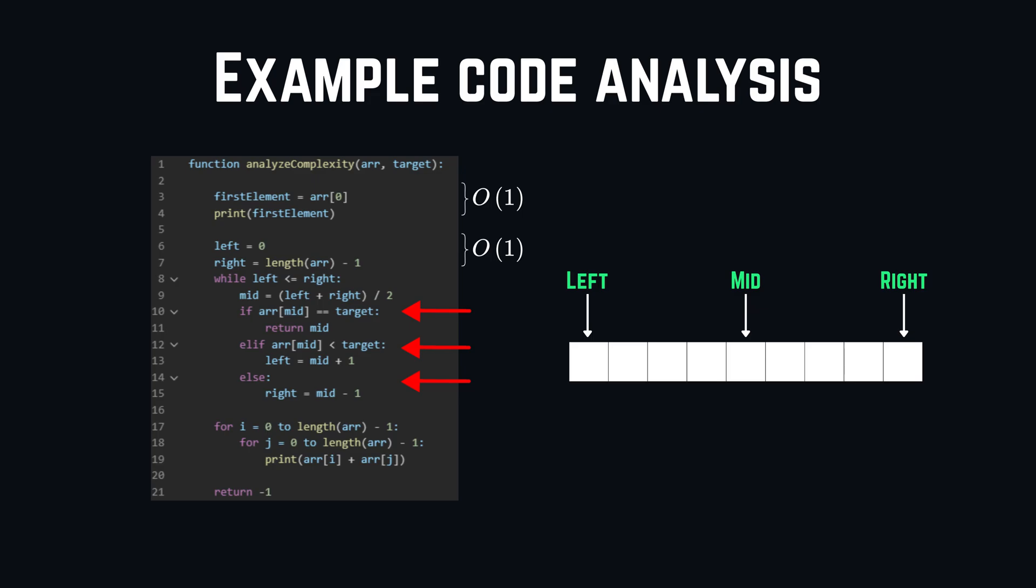What then happens is, we are having three different cases. The first one returns the mid pointer, if current mid is equal to the target. The second case updates the left pointer to mid plus 1, if the target is bigger than the element mid.